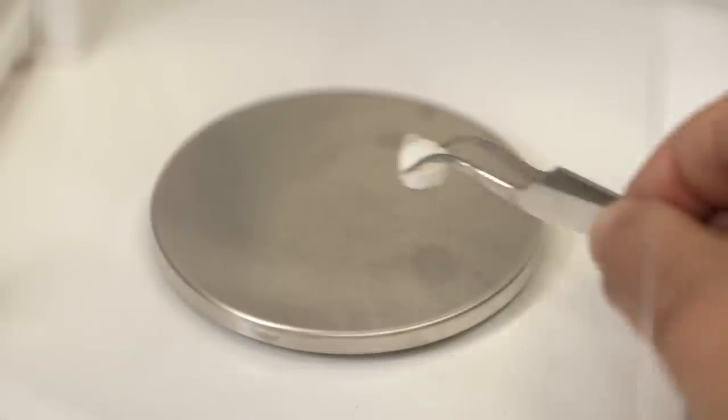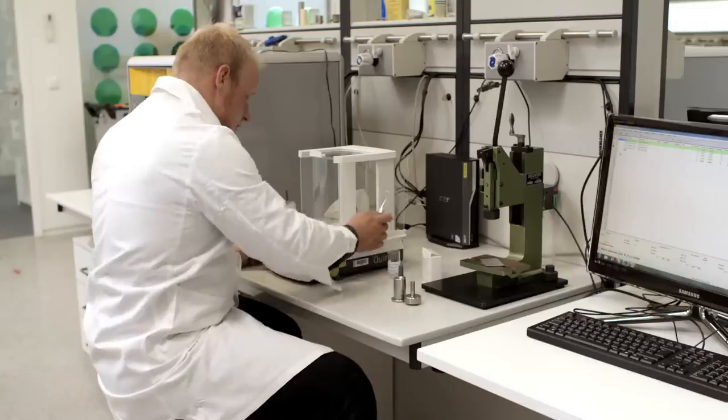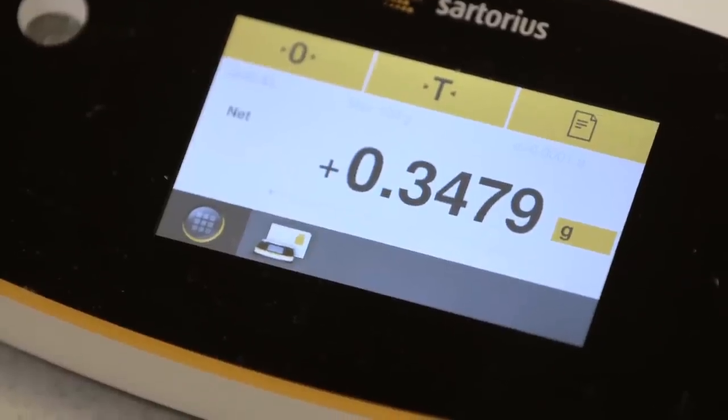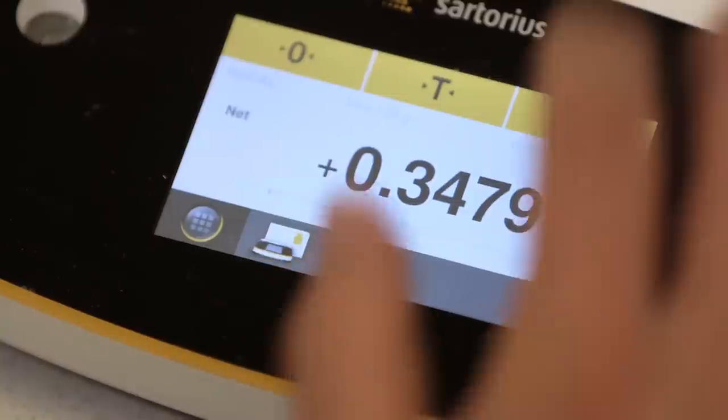Finally, the weight of the ready-to-use pellet is determined and automatically transferred to the software by balance connection. In this way, mistakes from manual sample weight transfer can be excluded.